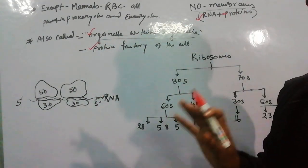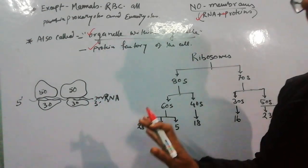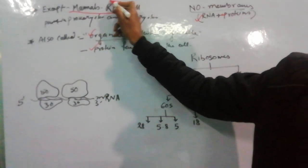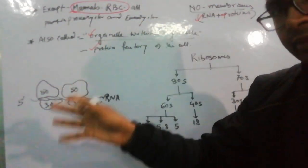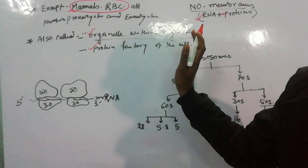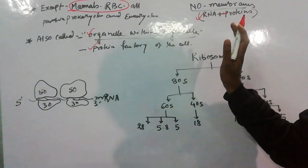They are cosmopolitan, present in all prokaryotes and eukaryotes, except in mammalian RBC. In other RBCs they are present, but in mammalian RBC they are absent. They are present in all prokaryotes and eukaryotes.